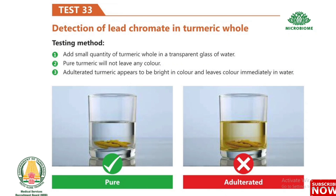Test 33: Detection of lead chromate in turmeric (whole). Add a small quantity of turmeric whole in a transparent glass of water. Pure turmeric will not leave any color. Adulterated turmeric appears bright in color and immediately leaves color in water.